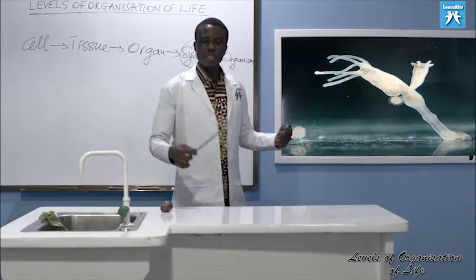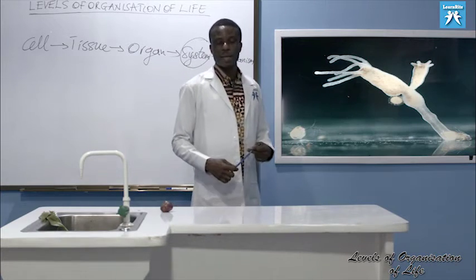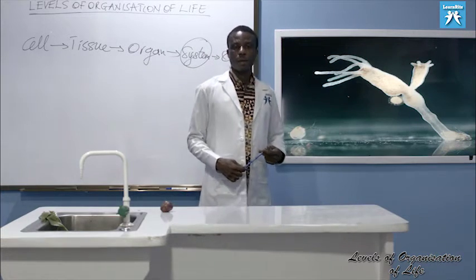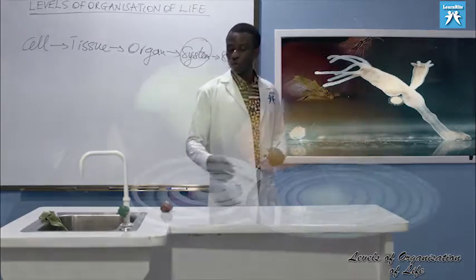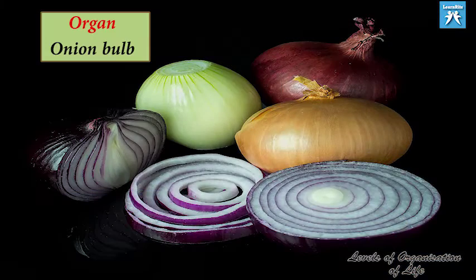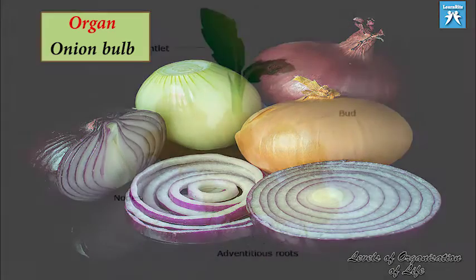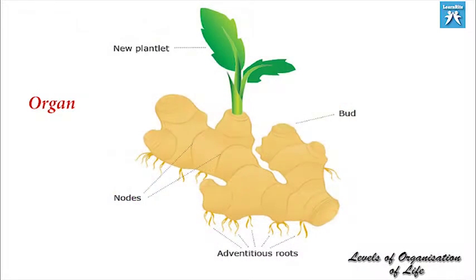At the organ level, examples are the onion bulb and the rhizome of ginger.